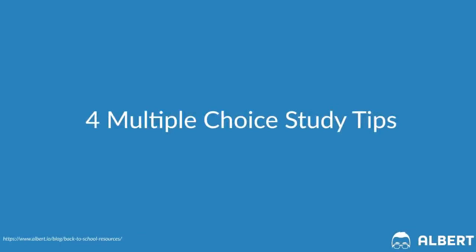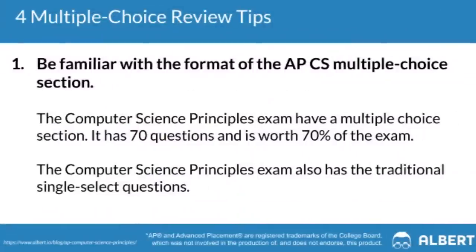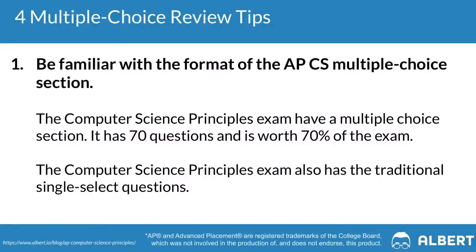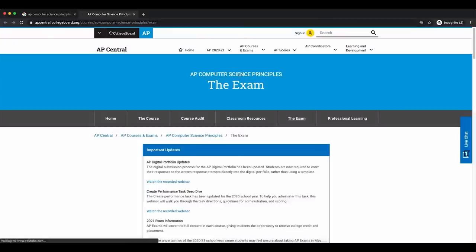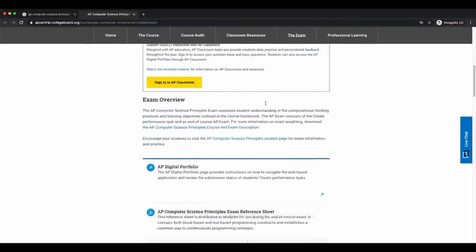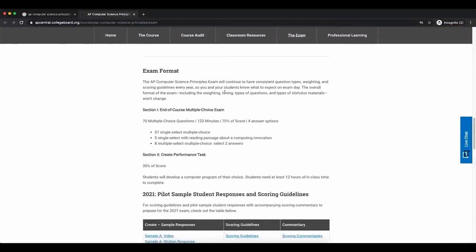The first thing to look at are some multiple choice tips. When it comes to the Computer Science Principles exam, you're going to have 120 minutes to answer 70 questions. These 70 questions are going to make up 70% of your exam score, so it's really important that you do particularly well on this part of the exam. Each one of these questions is worth 1% of your overall exam score.